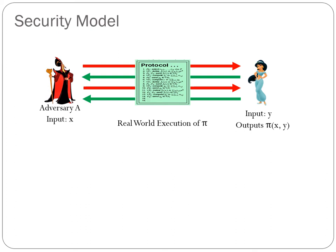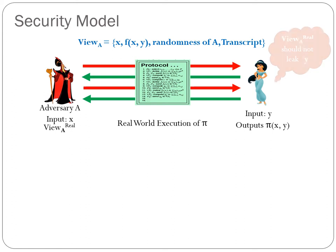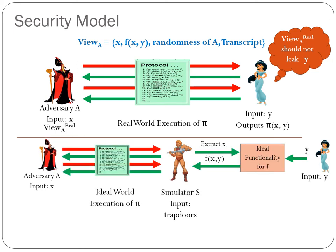Before presenting our results, I would like to recall the security model. Our protocols are proven secure in the real and ideal world model. We consider a real world execution of the protocol where one of the parties is initially corrupt. He runs the protocol with the honest party. We denote his input, output, randomness, and protocol transcript as his view — this is the real world view of the protocol. This view should not leak any information about the honest party's input; that is, view-A-real should not leak anything about Y.